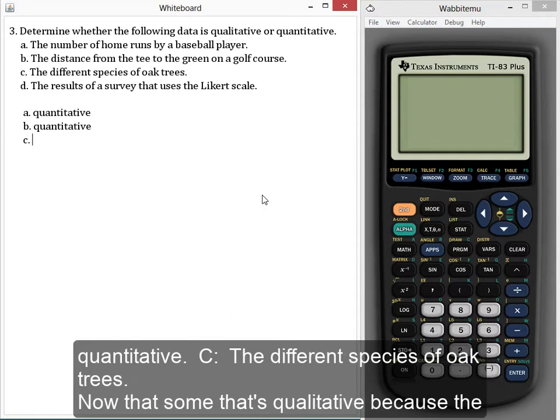C. The different species of oak trees. Now we've got something that's qualitative because the different species of oak trees are going to be words. So qualitative.